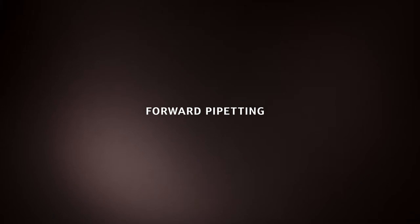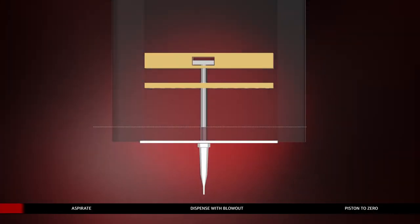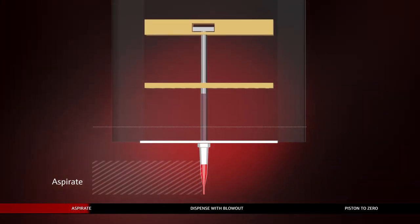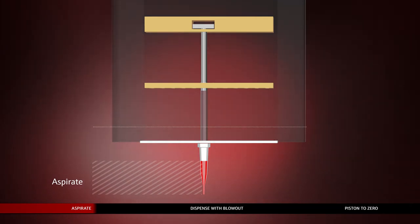We can generally distinguish between two different pipetting techniques. Forward pipetting is the standard mode, frequently used for mostly aqueous solutions. During the upward movement of the piston, an exactly set volume of liquid is aspirated into the tip from a source well.